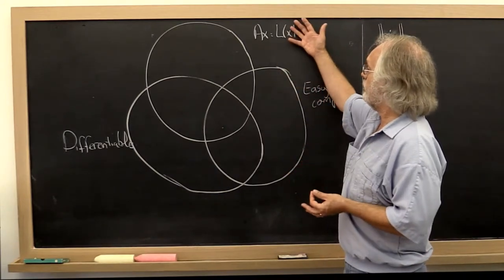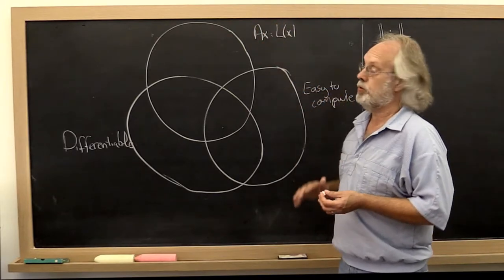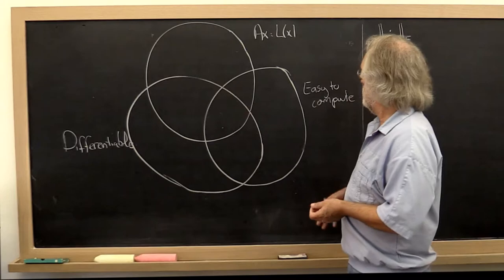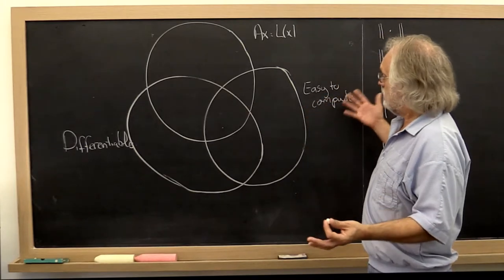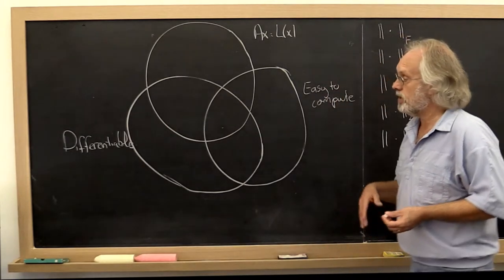We had a category of norms that somehow linked the magnitude of A to the magnitude of the linear transformation. We said there are norms that are easy to compute and there are norms that are differentiable. Let's go through it.